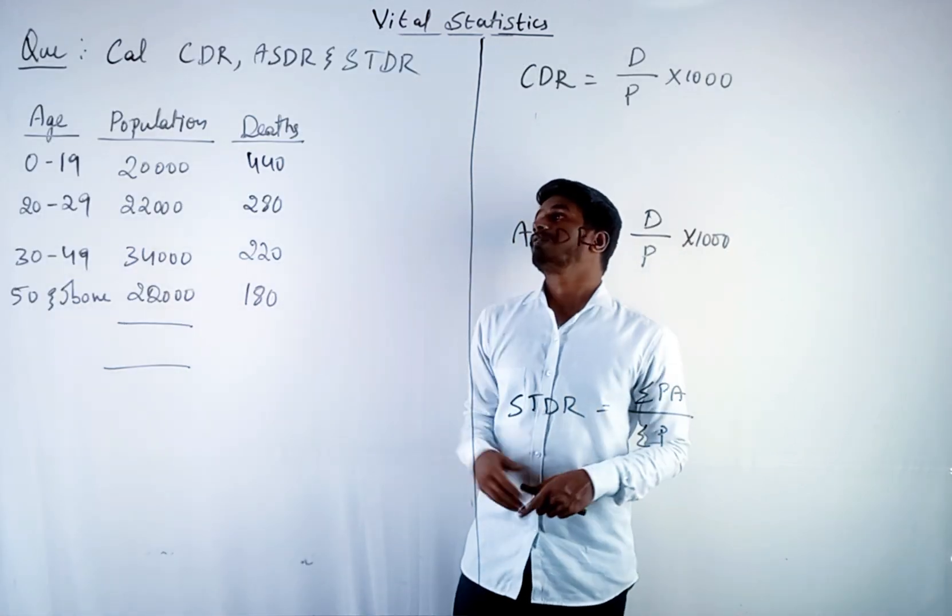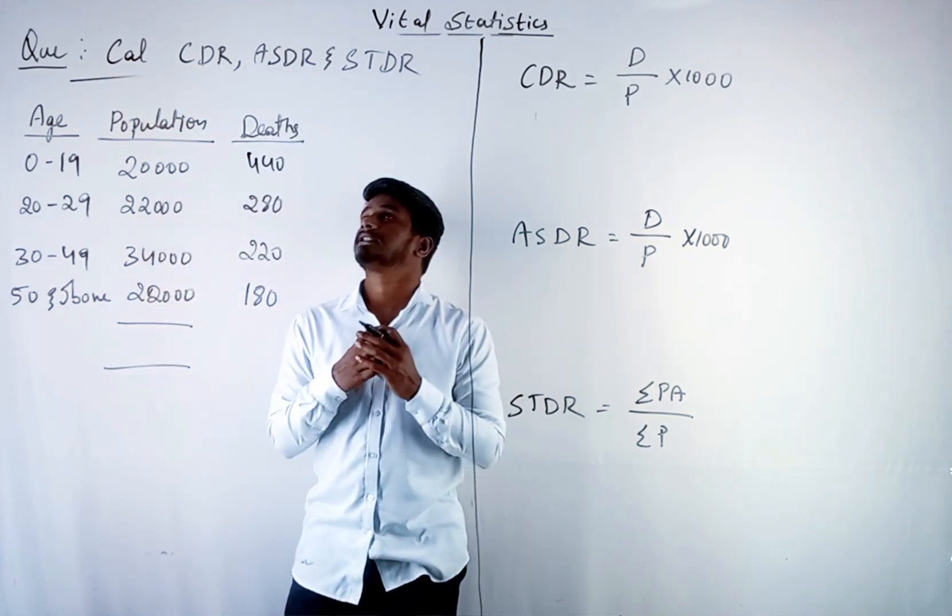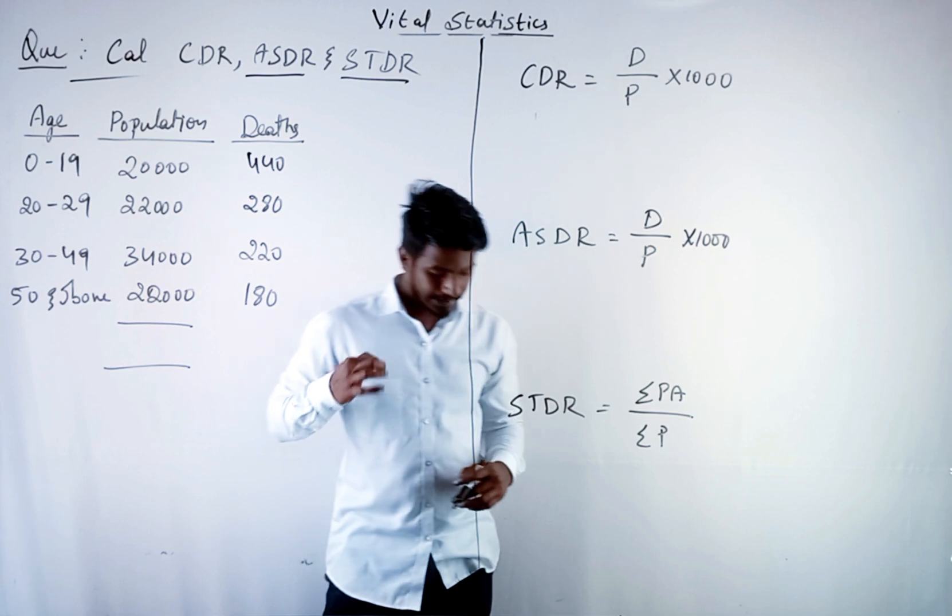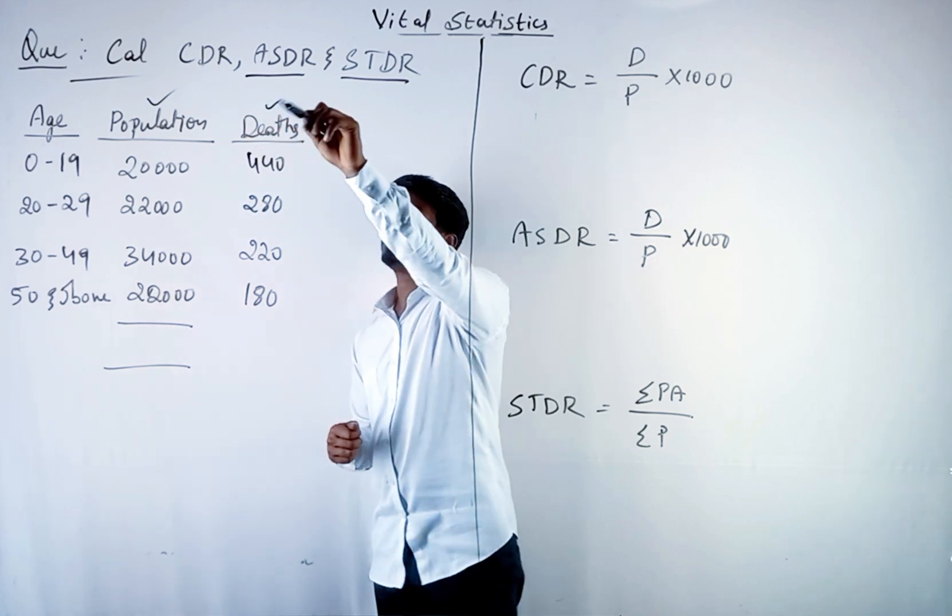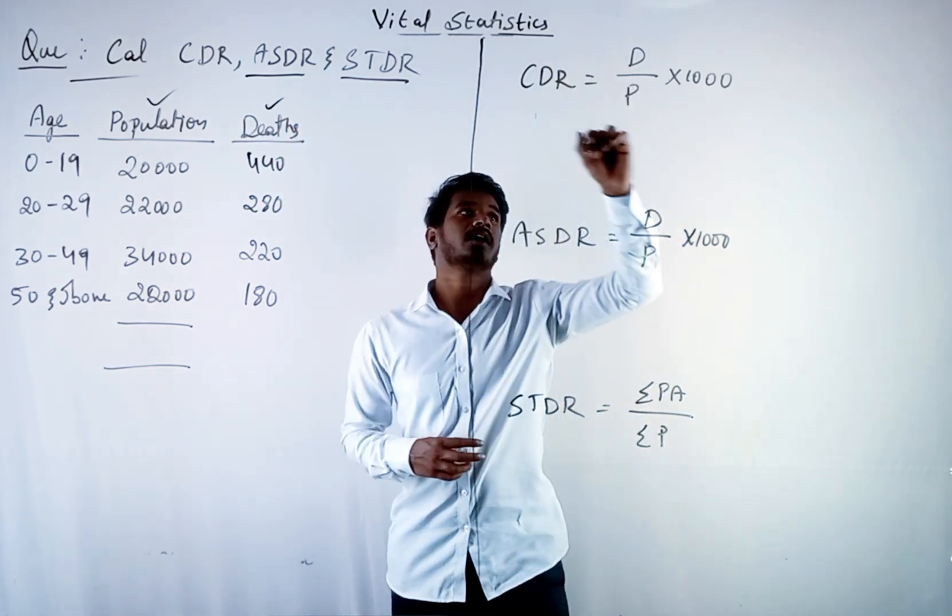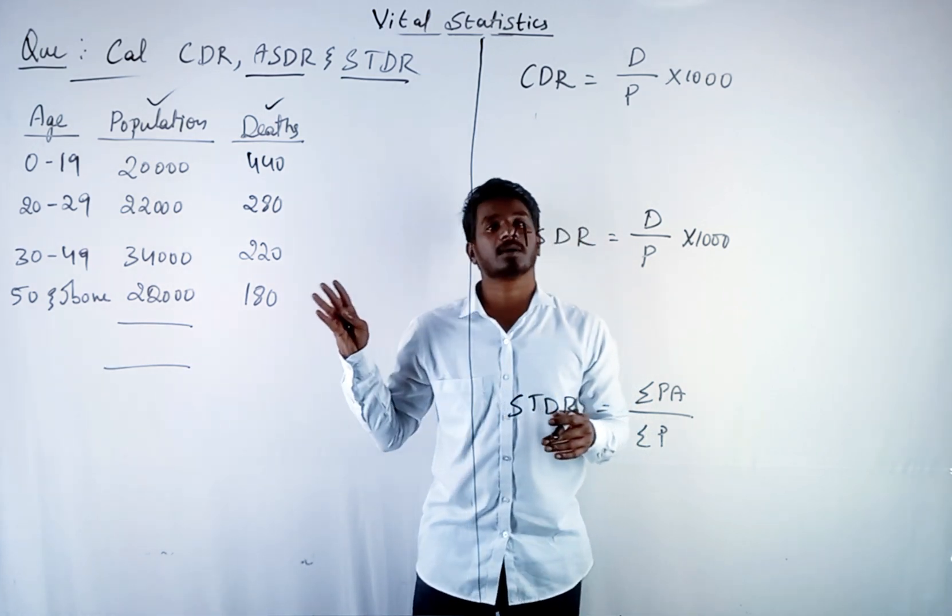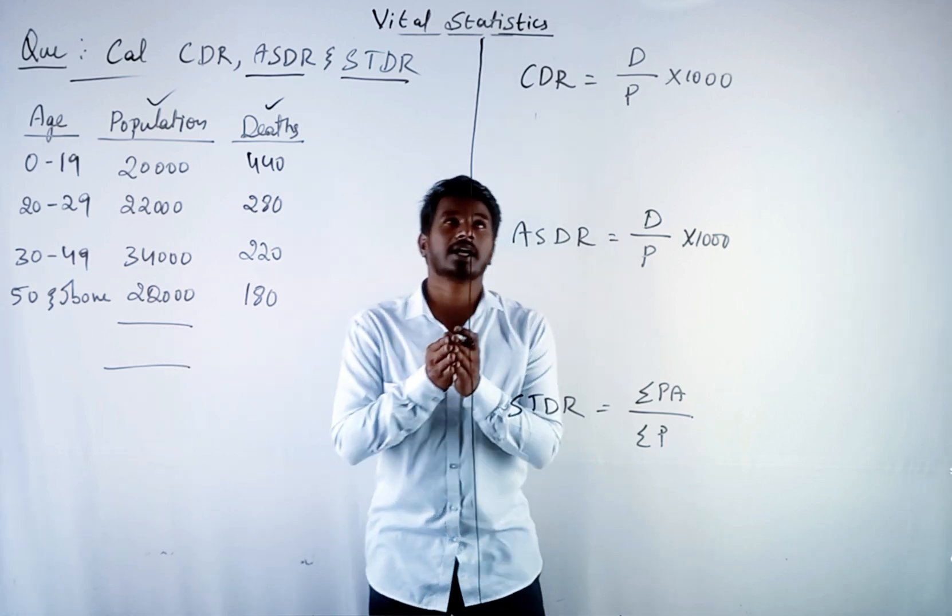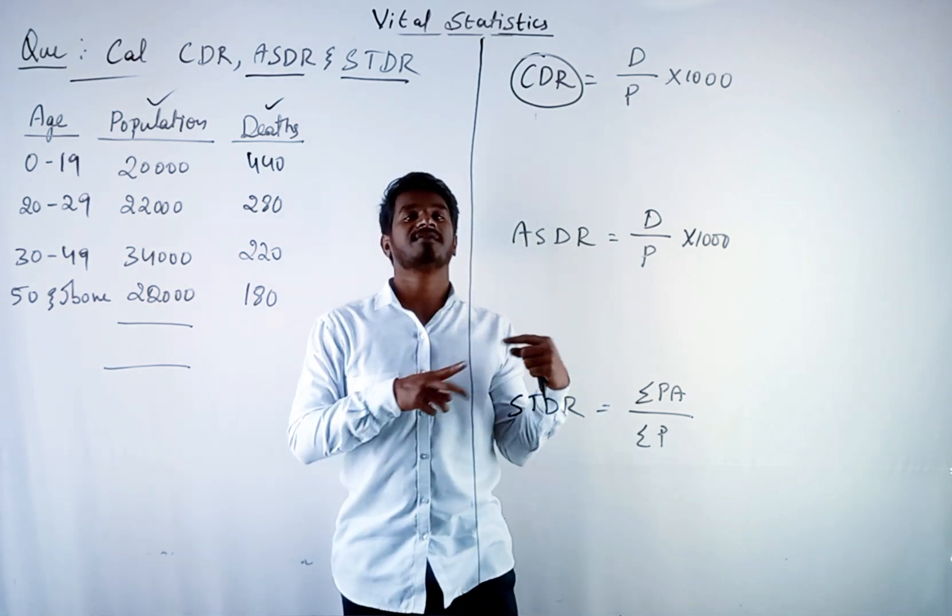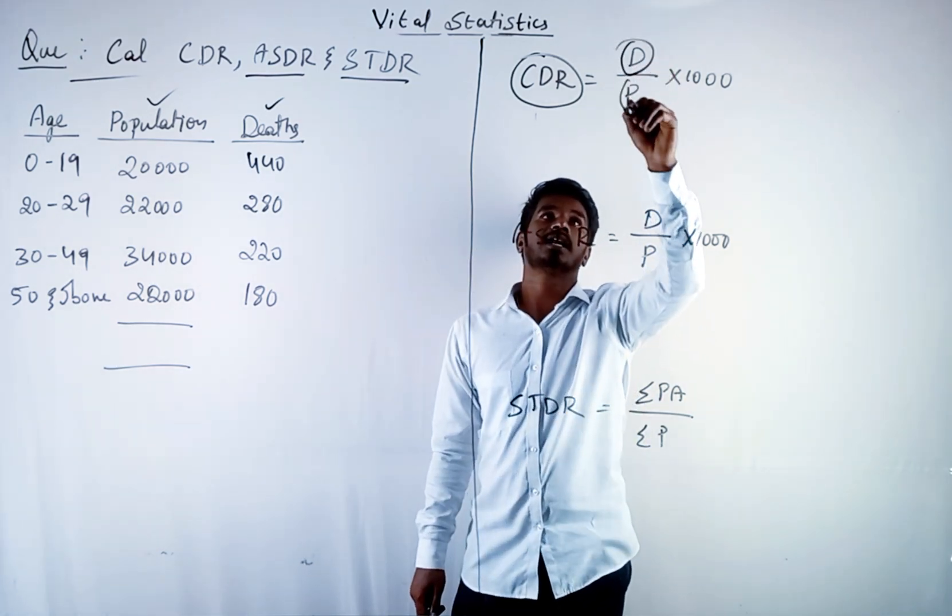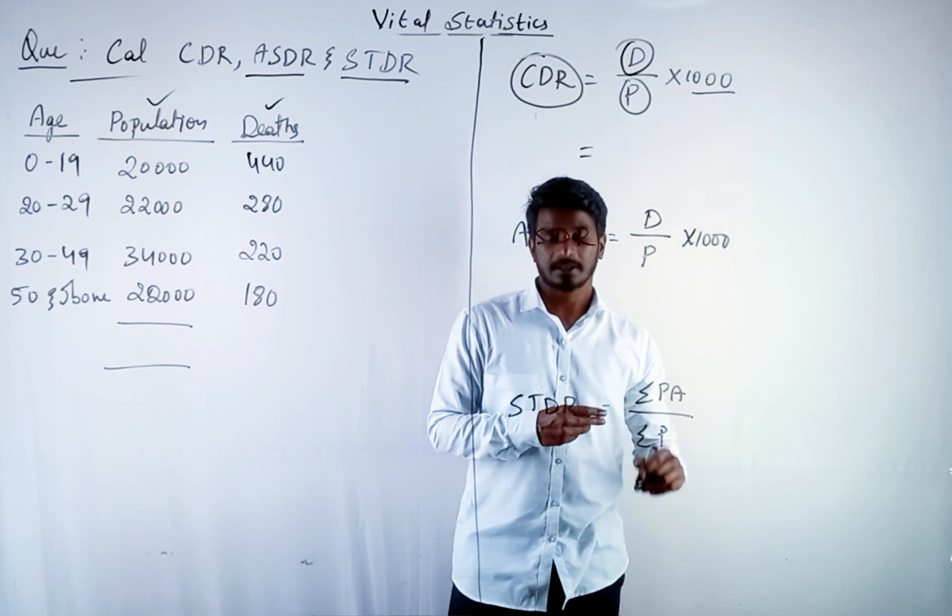Here we have a question. Calculate CDR, ASDR and STDR. Age is given, population is given, death is given. I have written the formula here and these are similar to our birth calculations. So CDR—there we calculated CFR. The formula is death divided by population into 1000.